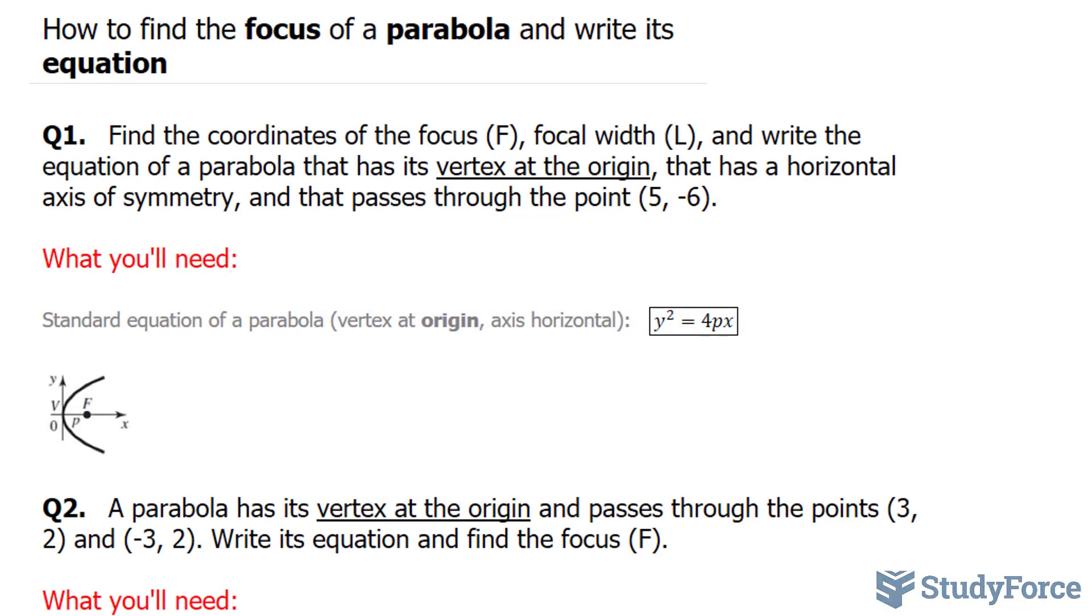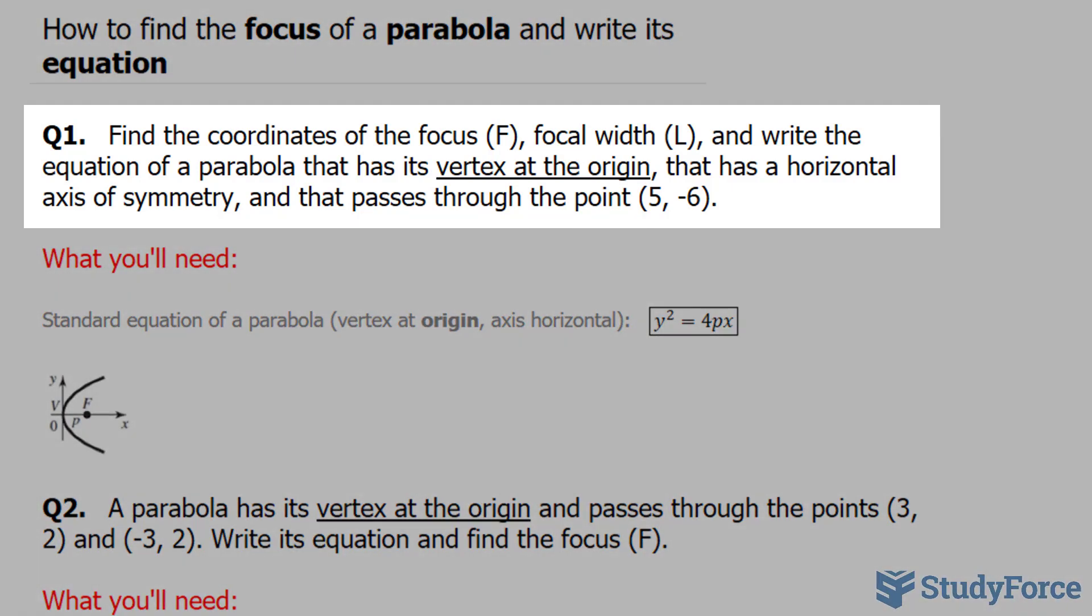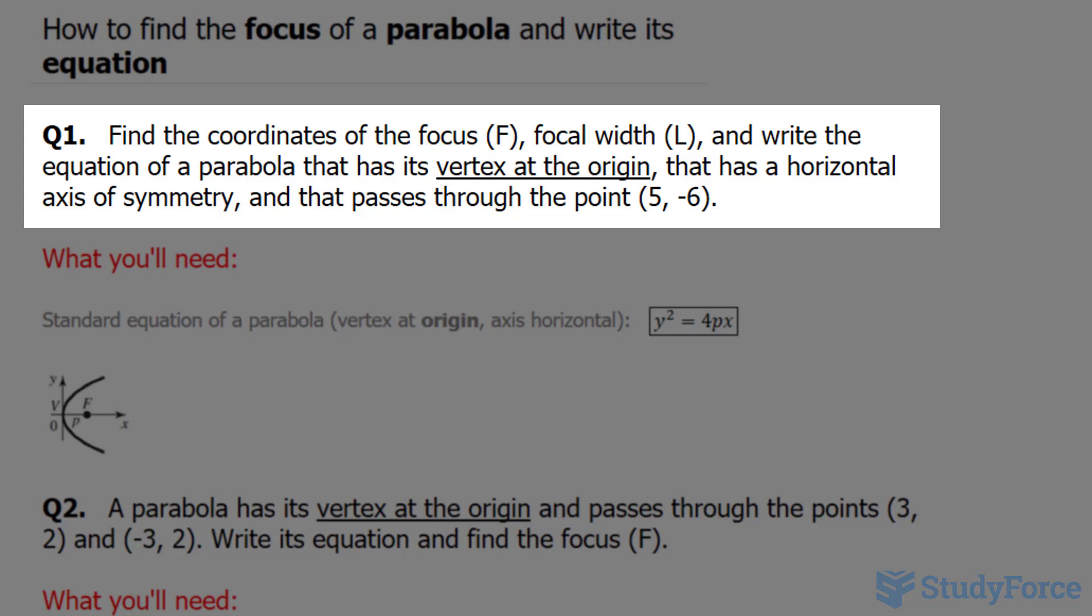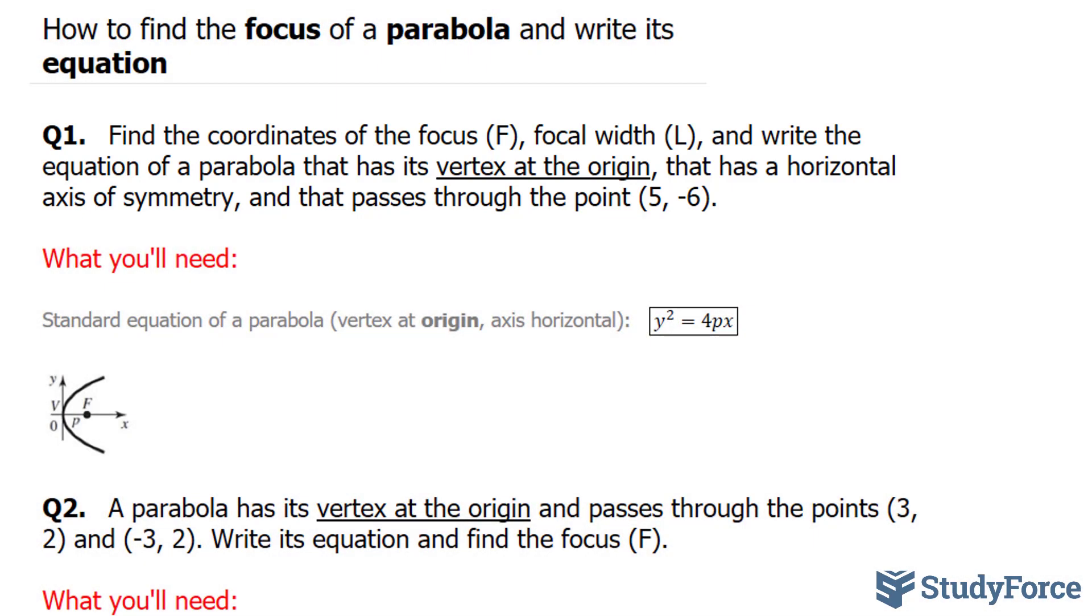In this video, I'll show you two examples on how to find the focus of a parabola and write its equation. The question reads: find the coordinates of the focus F, focal width represented as L, and write the equation of a parabola that has its vertex at the origin, has a horizontal axis of symmetry, and that passes through the point (5, -6).